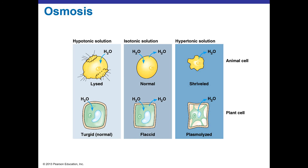Plants, on the other hand, prefer a hypotonic environment. They rely on turgor pressure to remain upright, so they want water rushing into the cell. In an isotonic environment, plant cells become rather flaccid — that's when you know it's time to water them. Even in a hypertonic environment causing plasmolysis, the plasma membrane shrinks away from the plant cell wall but still has attachments, making it easier for plant cells to recover compared to animal cells, which are unprotected by any cell wall.